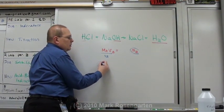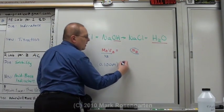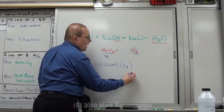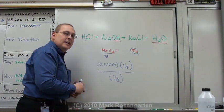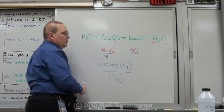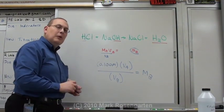We know the molarity of the acid. It's 0.100 molar. So all you've got to do is find out the volume of the acid and the volume of the base that it's going to take to neutralize that acid. Once you've got that information, you just can plug it in and that will tell you the molarity of the base. Nice and simple.